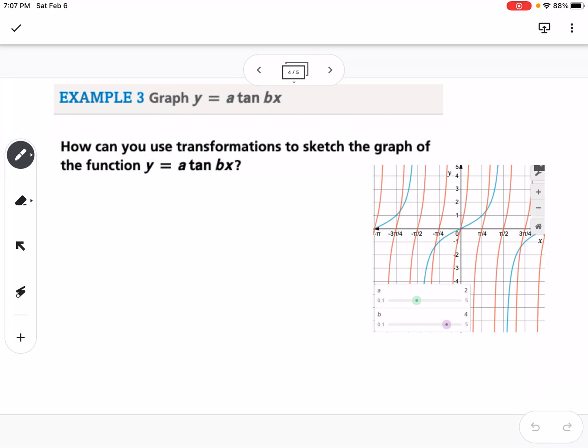So the next is, how can you use transformations to sketch the graph of the function y equals a tangent of bx? So we're going to talk about how a and b are going to transform tangent. So just like almost every other function we've looked at, a is going to be either a vertical stretch or a vertical shrink.